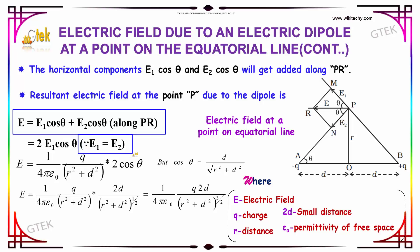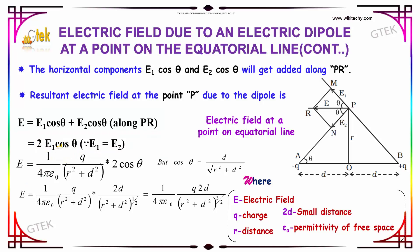Since the magnitudes of E1 and E2 are equal, we can set E1 equal to E2. Therefore E equals 2 E1 cos θ. Substituting the value for E1, the resultant electric field E equals 1 over 4π epsilon-naught, multiplied by Q divided by R squared plus D squared, multiplied by 2 cos θ.